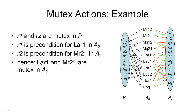What I still owe you is a definition for mutual exclusivity, or mutex, between actions. I will start by illustrating this with an example. We are looking at the same planning graph as before, but now the first layer we're looking at is the proposition layer P1, which was on the right-hand side in the previous graph.